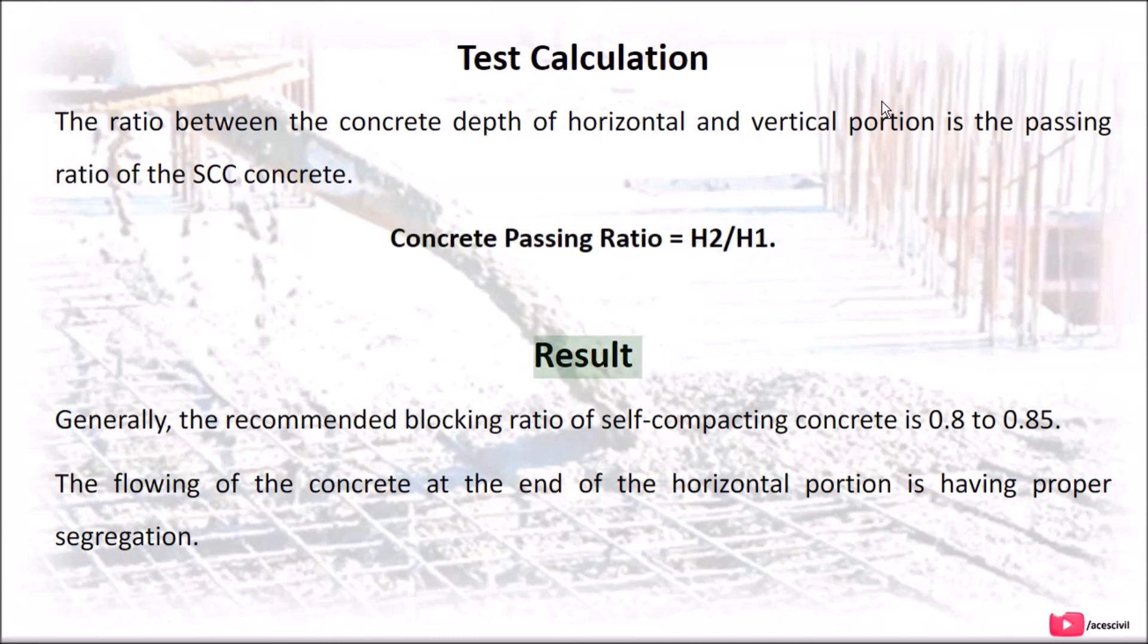Result: Generally, the recommended blocking ratio of self-compacting concrete is 0.8 to 0.85. The flowing of the concrete at the end of the horizontal portion is having proper segregation.